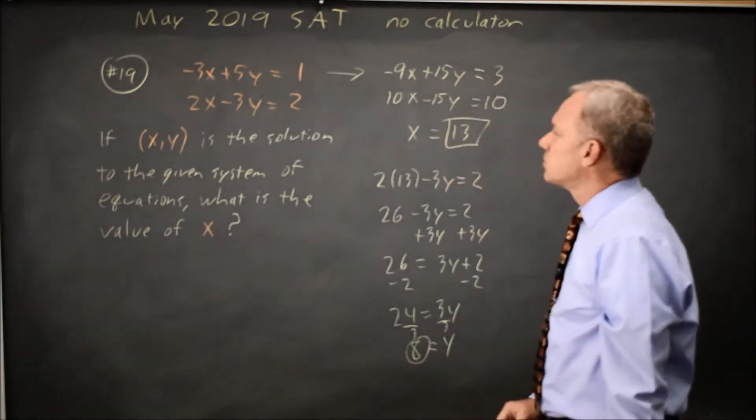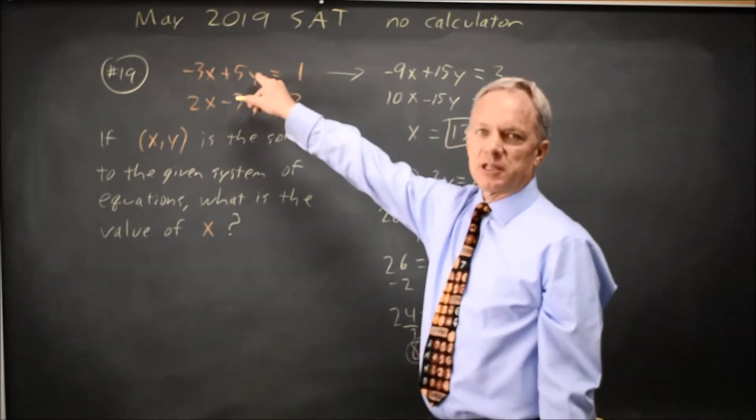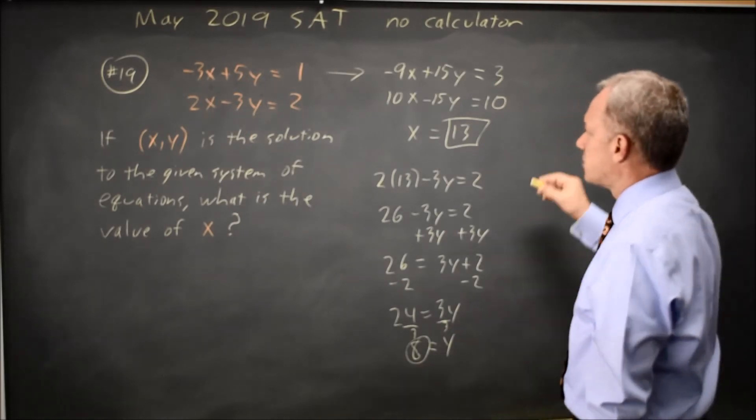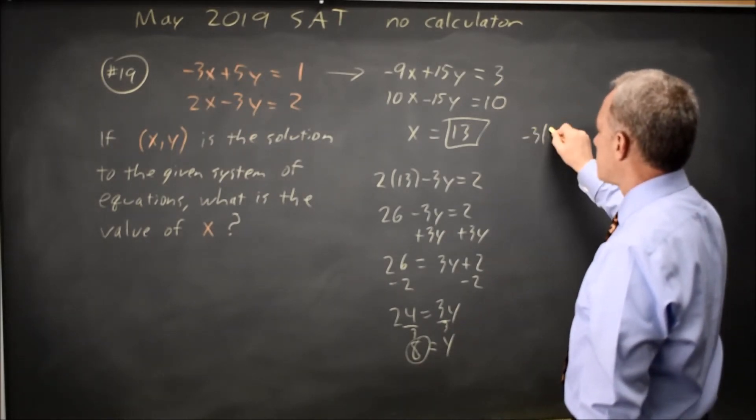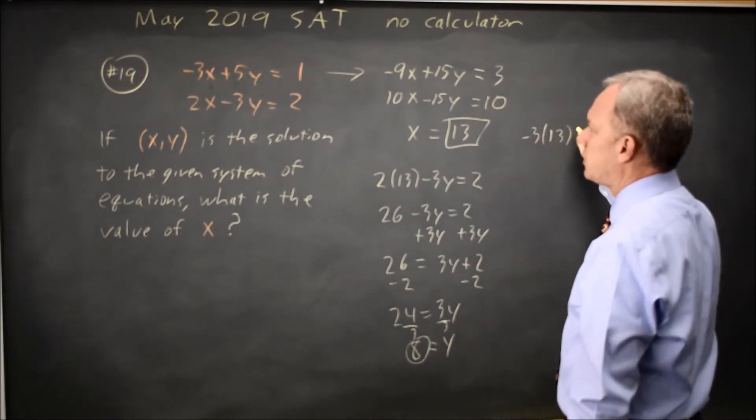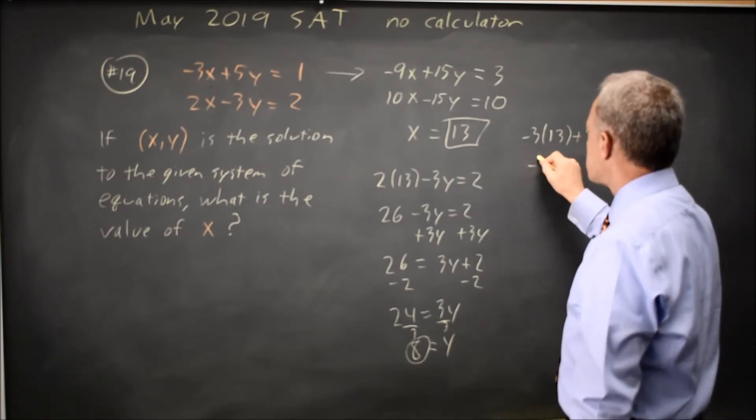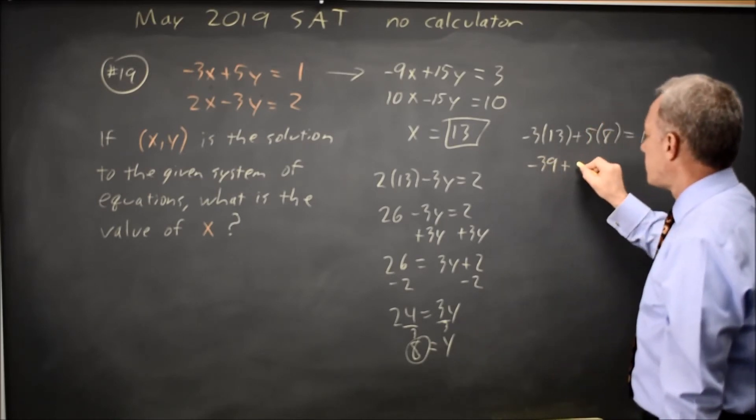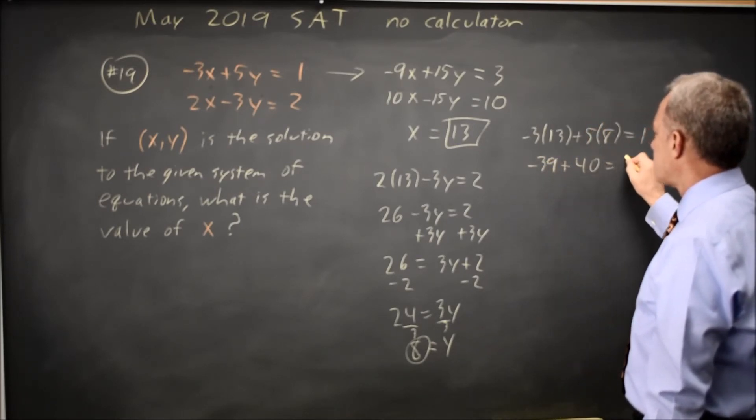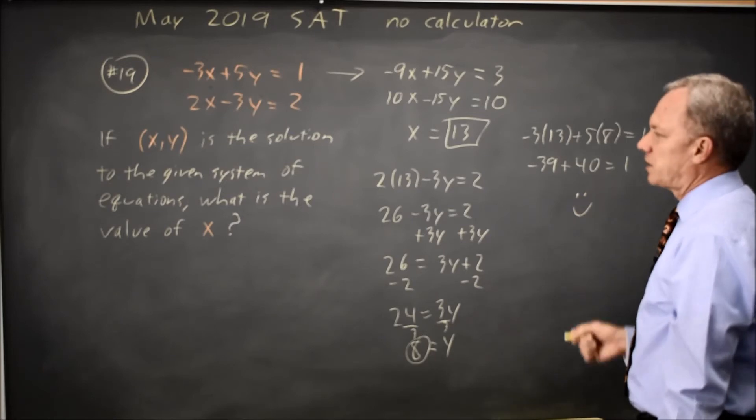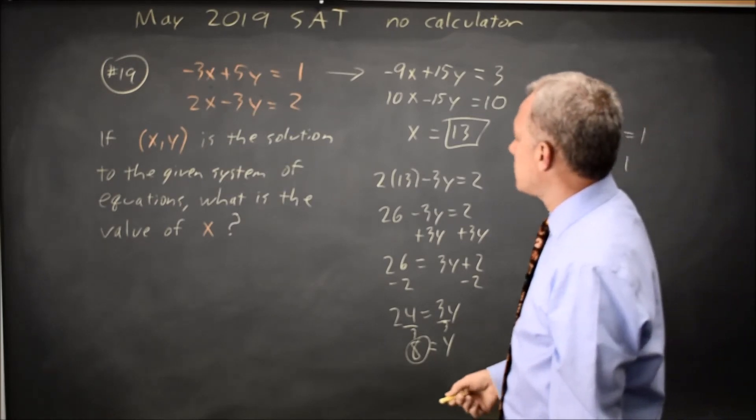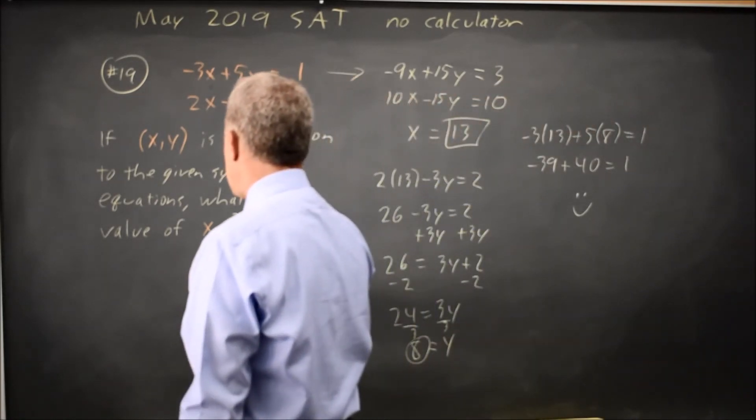Let's try x equals 13, y equals 8 in the first equation, and that will confirm that I have the correct answer. So negative 3 times x, which is negative 3 times 13, plus 5 times y, which is 5 times 8, should be 1. This is negative 39, plus 5 times 8 is 40, and yes, that is 1. So my answer is correct. And they were asking for x and x equals 13.